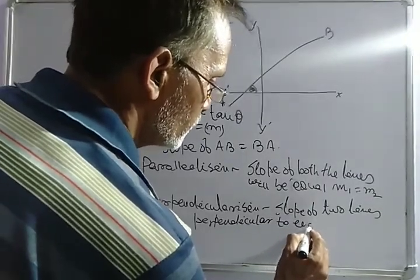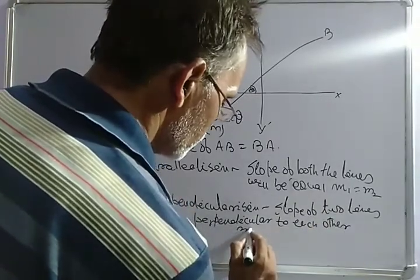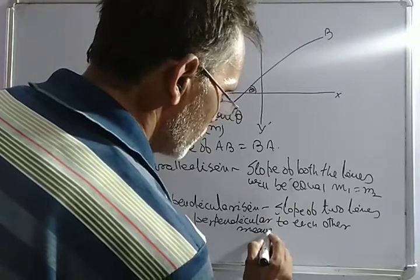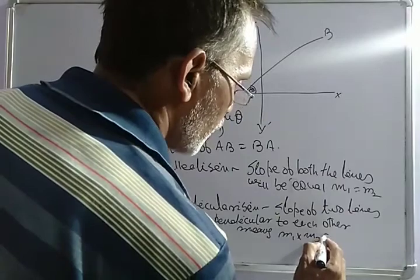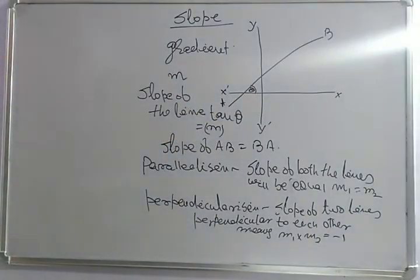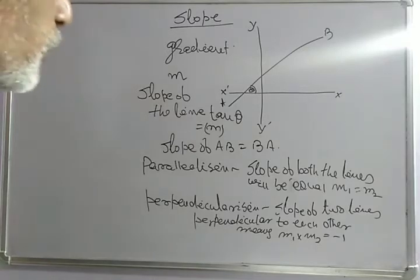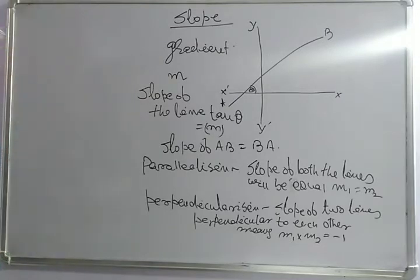For the condition of perpendicularity: the product of both slopes should be equal to minus 1. That means if the slope of the first line is m1 and the slope of the second line is m2, then the two lines are perpendicular to each other if and only if m1 multiplied by m2 is equal to minus 1.